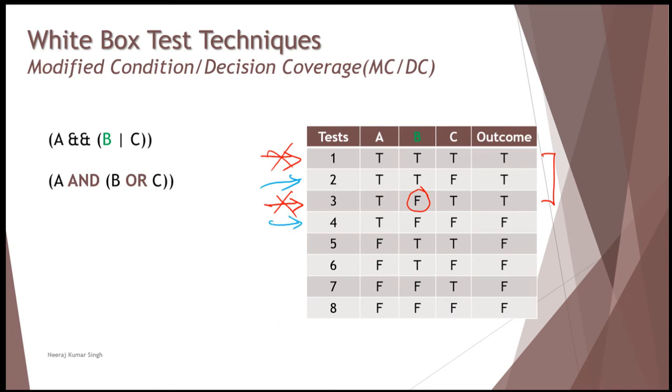So if you see here, A remains true, and C remains false, but B is flipped, where B in blue case is true, but here it is false. And that's actually turning out the outcome as well. That means changing the output. So that's where the test case, which we can pick from here is two and four.